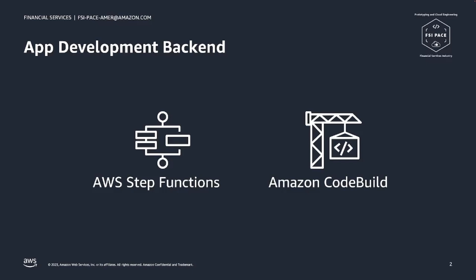We leverage two key services here: AWS Step Functions and Amazon CodeBuild. Using Step Functions, we can achieve a complex set of asynchronous tasks necessary for creating new applications through Backstage. Step Functions is a workflow service that helps developers use AWS services to build distributed applications, automate processes, and orchestrate microservices.